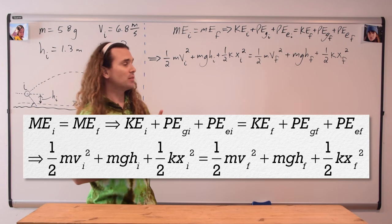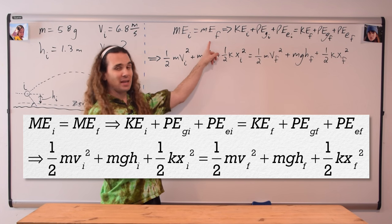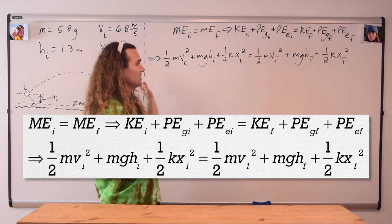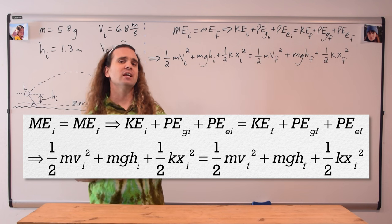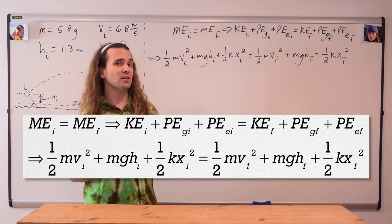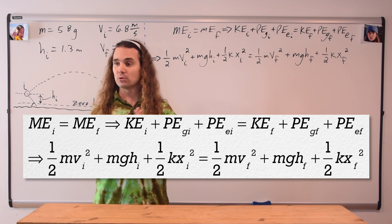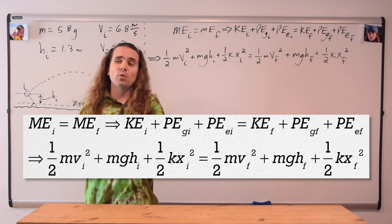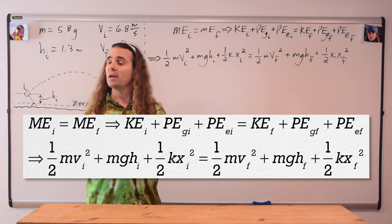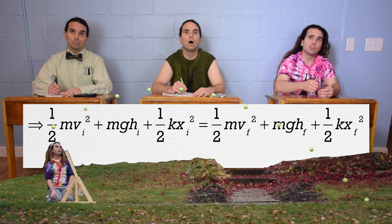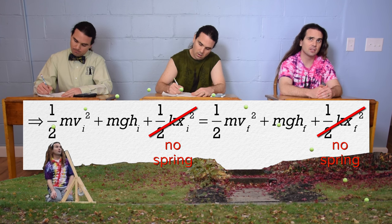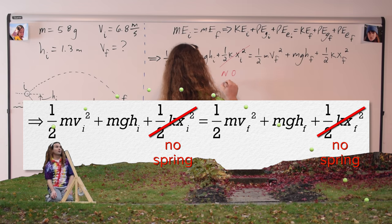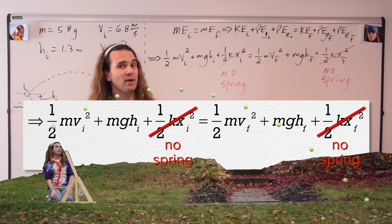That is correct. This little equation — mechanical energy initial equals mechanical energy final — actually works out to be this giant equation. Our job is to look at the giant equation and decide which energies cancel out because they are equal to zero. Bo, look at the equation and tell me which energies cancel out and why. There is no spring in the problem, so there isn't an elastic potential energy either initial or final. That is correct — no spring, so no elastic potential energy in this problem.